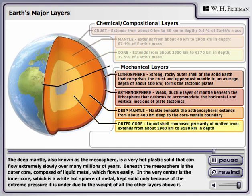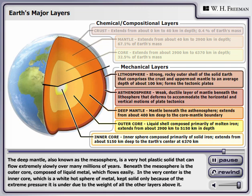Beneath the mesosphere is the outer core, composed of liquid metal, which flows easily. In the very center is the inner core, which is a white-hot sphere of metal, kept solid only because of the extreme pressure it is under due to the weight of all the other layers above it.